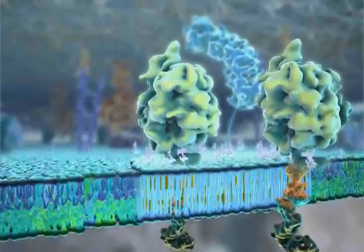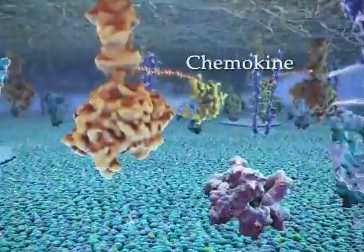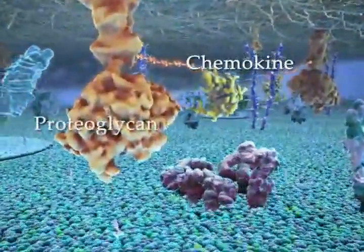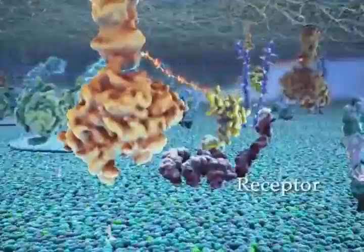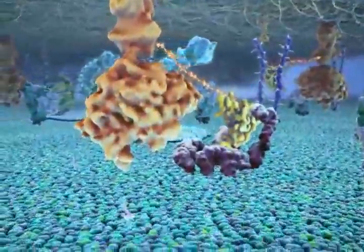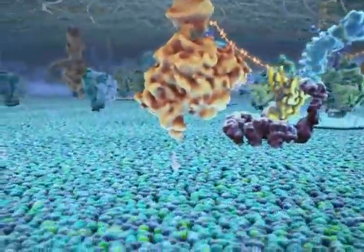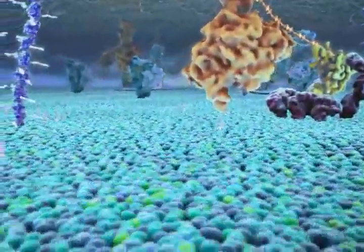At sites of inflammation, secreted chemokines bound to heparin sulfate proteoglycan on endothelial cells are presented to leukocyte 7-transmembrane receptors. The binding stimulates leukocytes and triggers an intracellular cascade of signaling reactions.